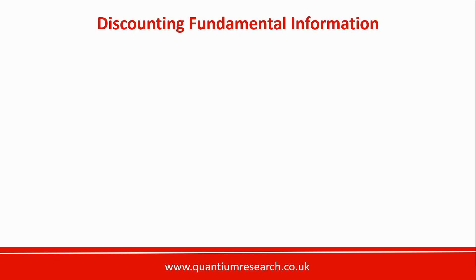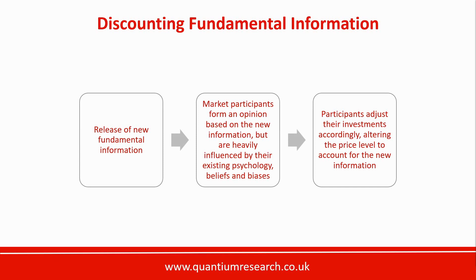New information can't just get objectively discounted in a formulaic way. What actually happens is the information passes through a filter of human biases. Once new information is released, market participants will then form an opinion based on the new information, but their opinion will be heavily influenced by their existing psychology, beliefs, and biases. Then participants adjust their investments accordingly, which changes the price level to account for the new information. So what's actually being discounted is the collective opinion of information, rather than the information itself. Technical analysis attempts to capture that psychological influence by studying the raw price behavior.